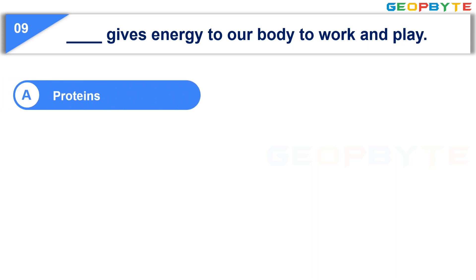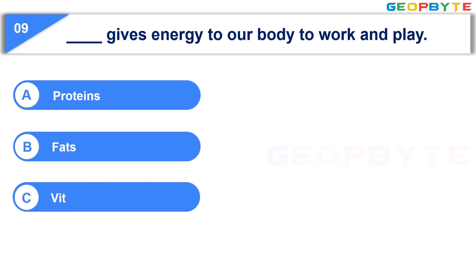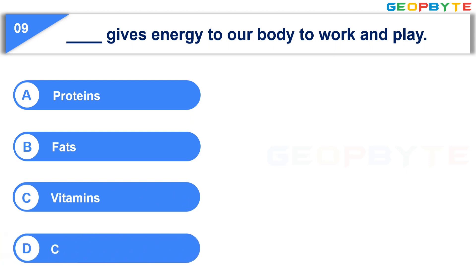Option A: proteins. Option B: fats. Option C: vitamins. Option D: carbohydrates. Your time starts now.